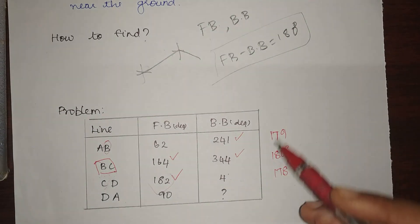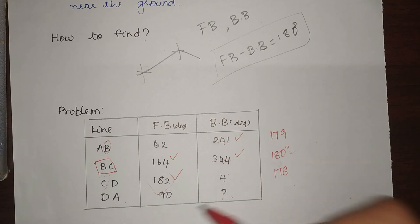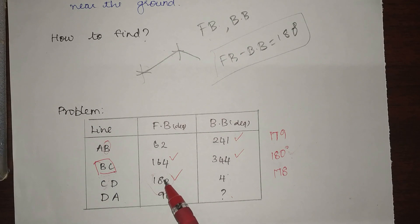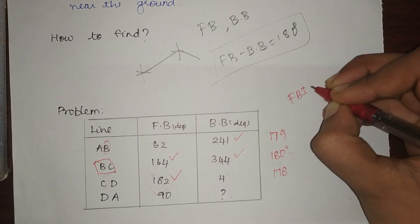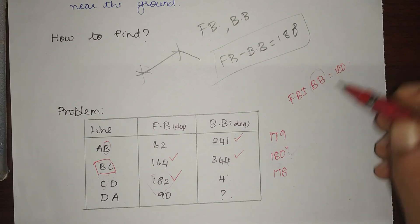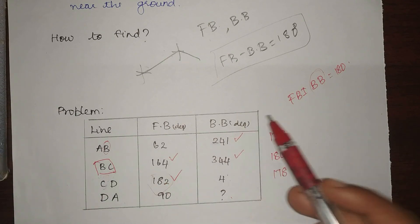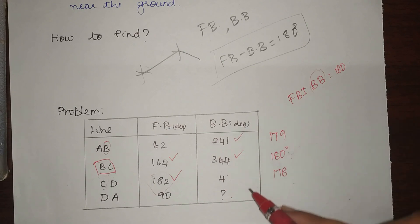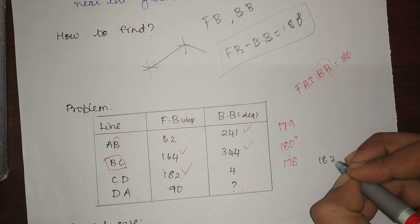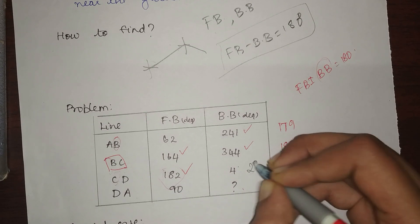My correct values are 241, 164, 344, and 182. I need to find the correct back bearing of CD. Since fore bearing plus or minus back bearing equals 180 degrees, and 182 is greater than 180, I subtract 180 degrees: 182 minus 180 equals 2 degrees. So my true back bearing is 2 degrees, not 4 degrees.